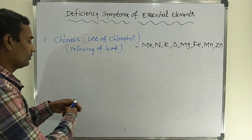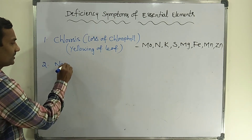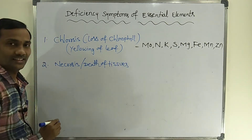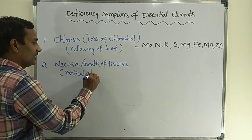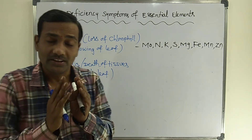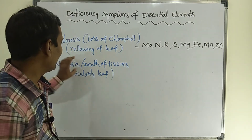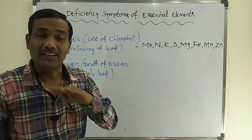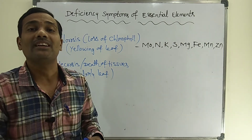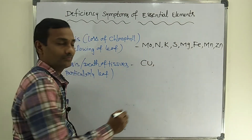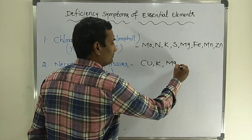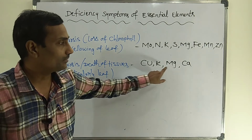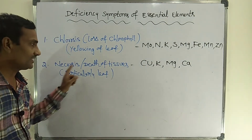The second disease is necrosis — death of tissues, particularly leaf tissues. The deficiency of different mineral elements causes necrosis in the leaves. The soft tissues found in the leaves will die because of deficiency of certain mineral elements. The elements responsible are copper, potassium, magnesium, and calcium. Absence of even one of these mineral elements causes necrosis or death of tissues.